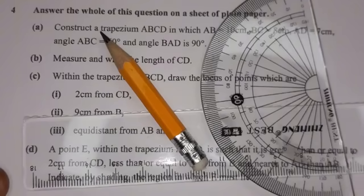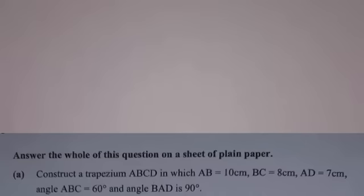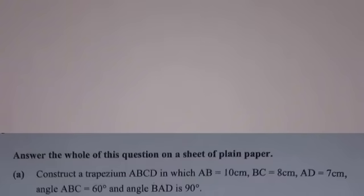If you're new to this channel, kindly subscribe, hit the like button, comment, and share. The first question says: construct a trapezium ABCD in which AB is 10 centimeters, BC is 8 centimeters, and AD is 7 centimeters. Angle ABC is 60 degrees, and angle BAD is 90 degrees.